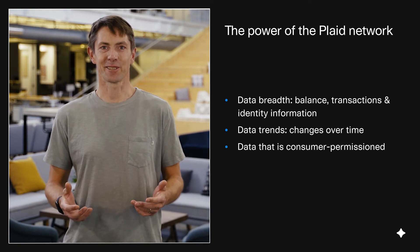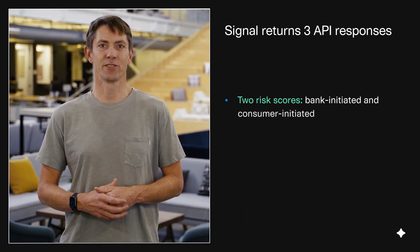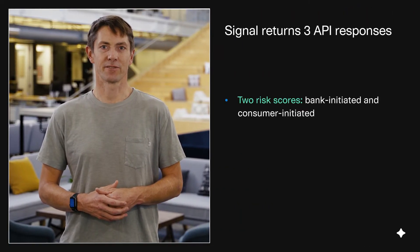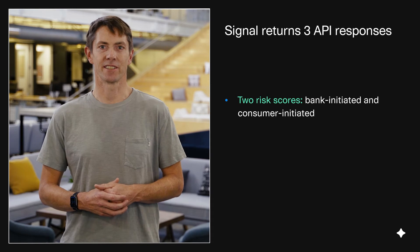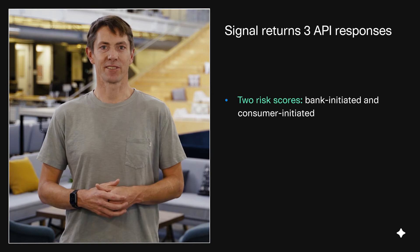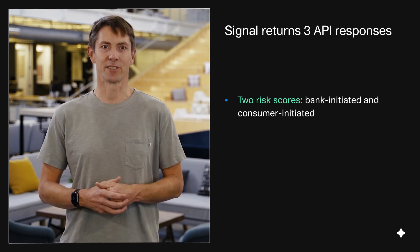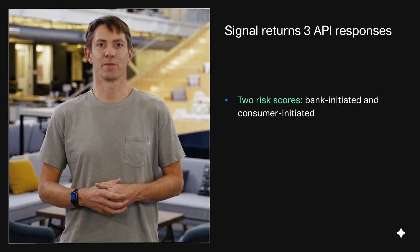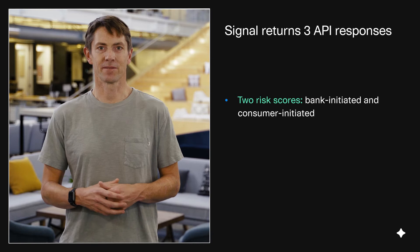How does Signal work? Signal analyzes each individual transaction using our machine learning model trained on consumer permissioned data across tens of millions of ACH transactions. Our product delivers two risk scores for two different types of ACH returns in under three seconds. We score the likelihood of bank-initiated returns — think NSF or closed account return codes — and the likelihood of consumer-initiated returns, so think of fraud.